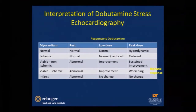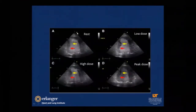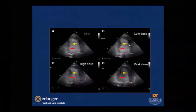In this image, the yellow arrow shows the mid inferior wall segment at rest. At low dose, the wall thickness improves. At high dose there is some decrease in contractility, and when the dose reaches peak the contractility reverts back to baseline — showing this biphasic response, indicating the mid segment is in hibernation.